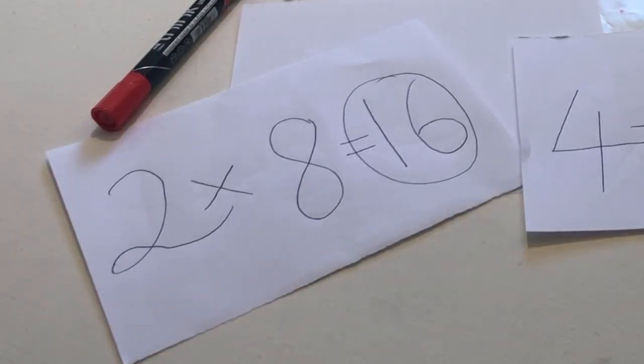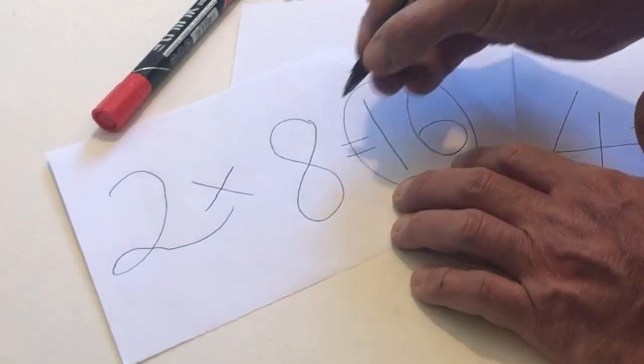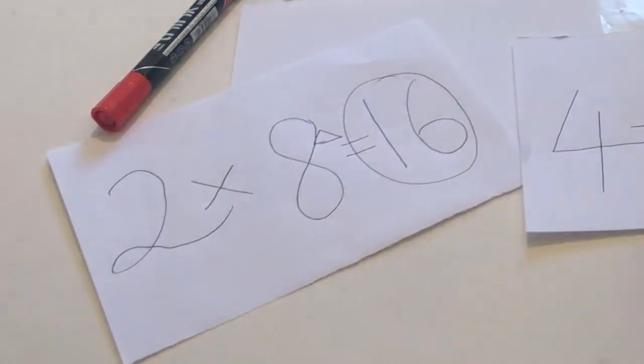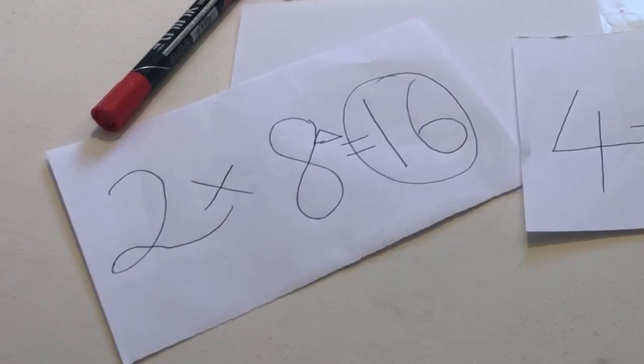If 2 times 8 is 16, draw a triangle next to the circle. If 4 divided by 2 equals 2, draw a circle next to the square.